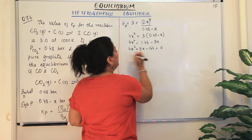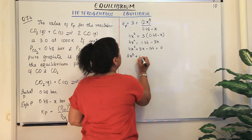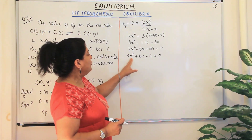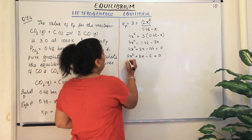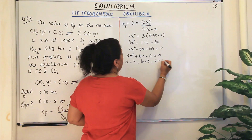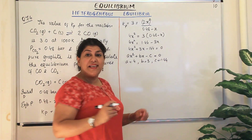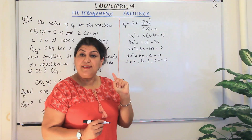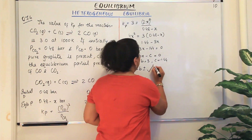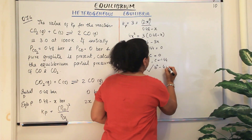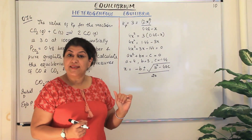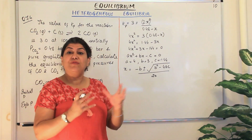Whenever you have an equation of the form ax² + bx − c = 0, you can compare it to our equation. Here a = 4, b = 3, and c = −1.44. The value of x can be found using the quadratic formula: x = (−b ± √(b² − 4ac)) / (2a).